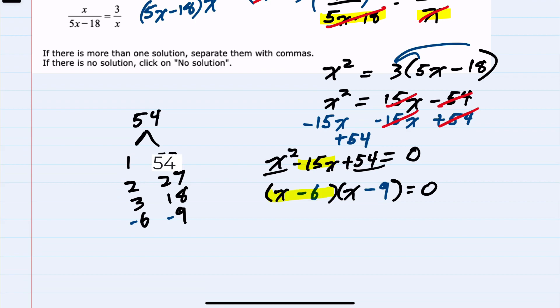And since we have two terms multiplying to be 0, either the first must be 0 or the second must be 0. And from here, we can solve each one for the variable x and have x equals 6 or x equals 9.